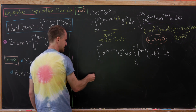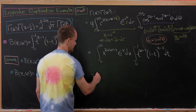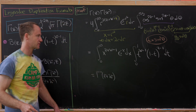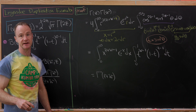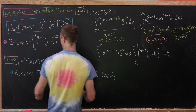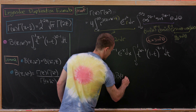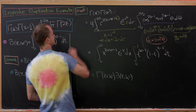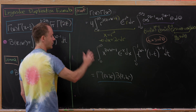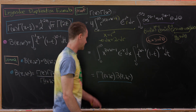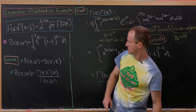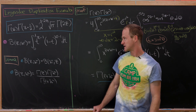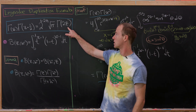The radial integral is exactly Γ(z+w), and the angular integral is the beta function B(w, z) = B(z, w). Looking at the extreme left and right-hand sides, and dividing by Γ(z+w), we obtain B(z, w) = Γ(z)Γ(w) / Γ(z+w). Armed with this lemma, it's not too hard to derive the duplication formula.